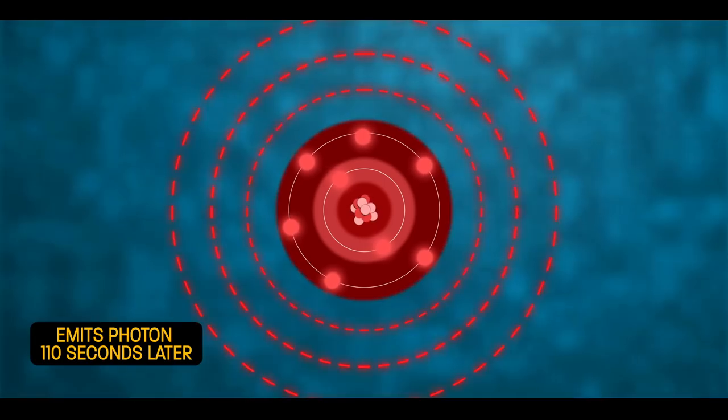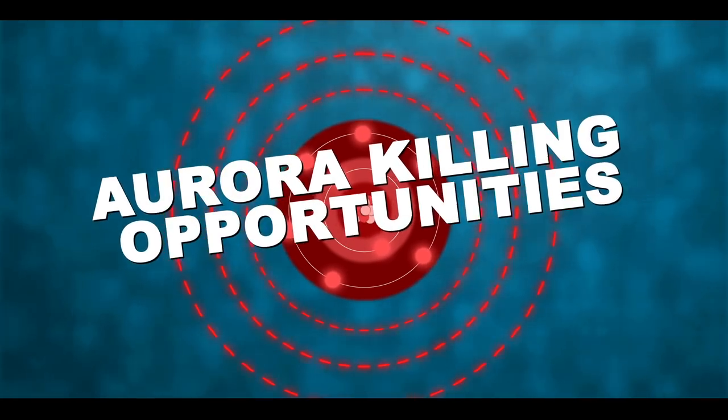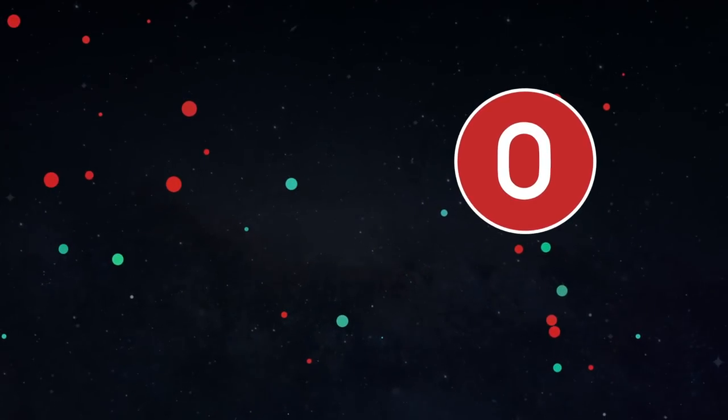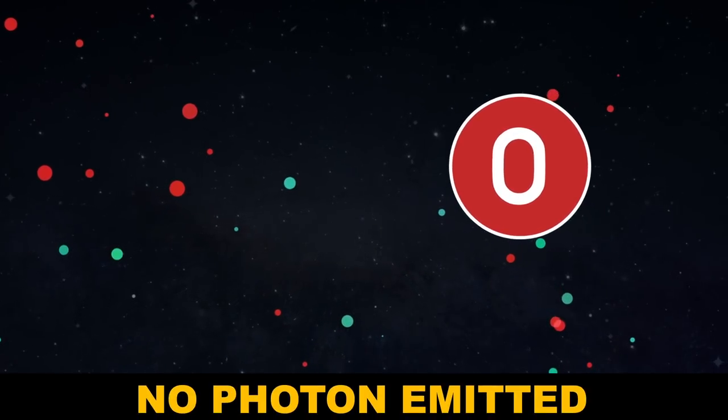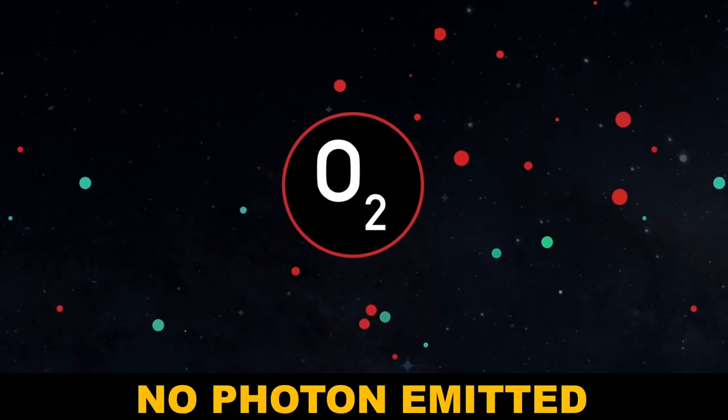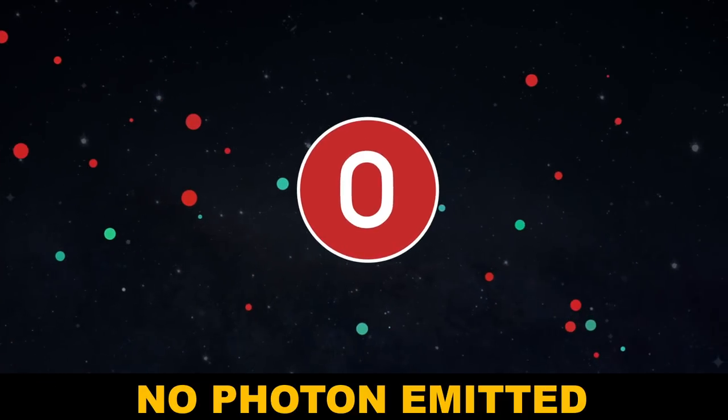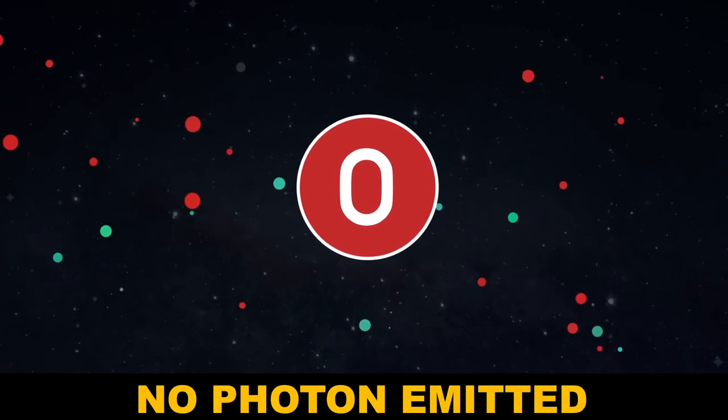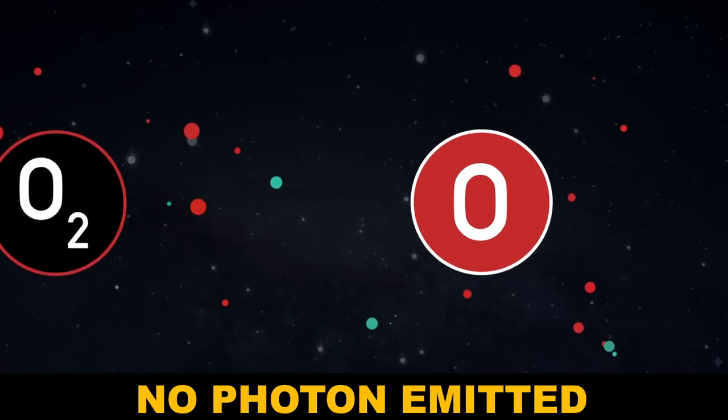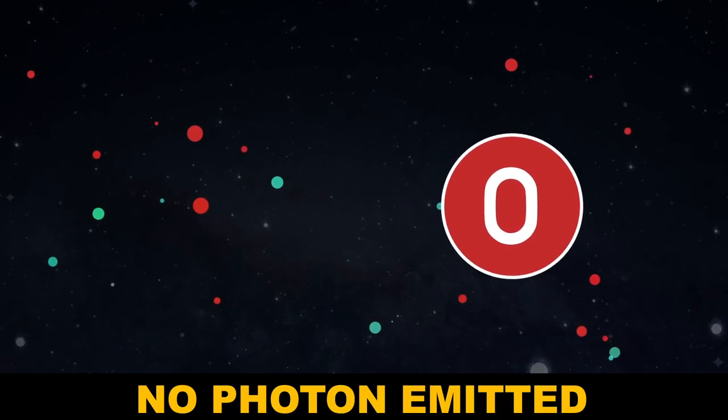You can think of those time windows as aurora-killing opportunities, because if a nearby molecule crashes into an excited oxygen atom, it totally throws the oxygen off its game. That extra energy that would have gone to the photon gets transferred instead to the molecule that crashed into the oxygen. And because red photons need 110 seconds to brew—those red photon-emitting oxygens are much more likely to get bashed before they release their photons than the green photon-emitting oxygens.